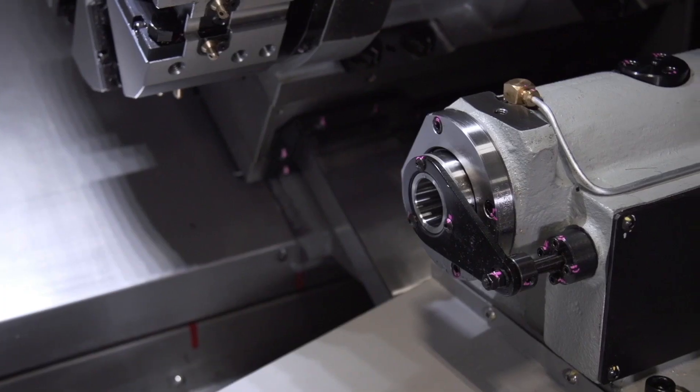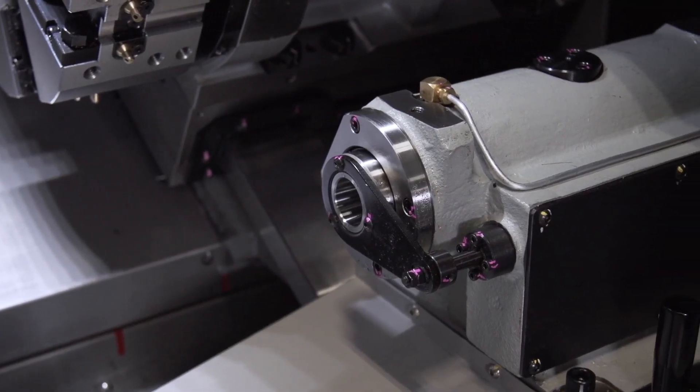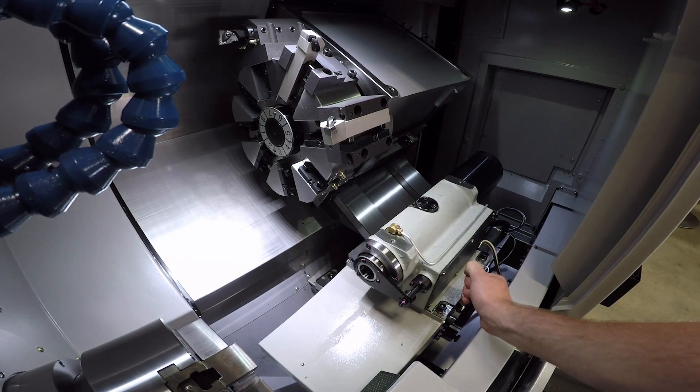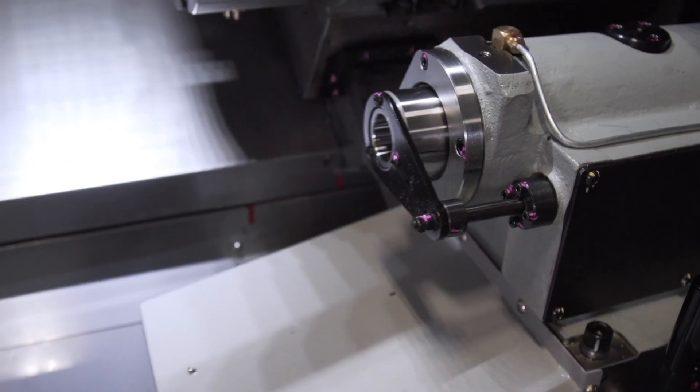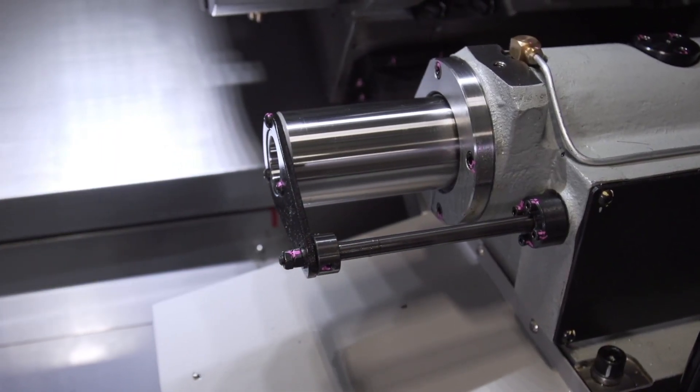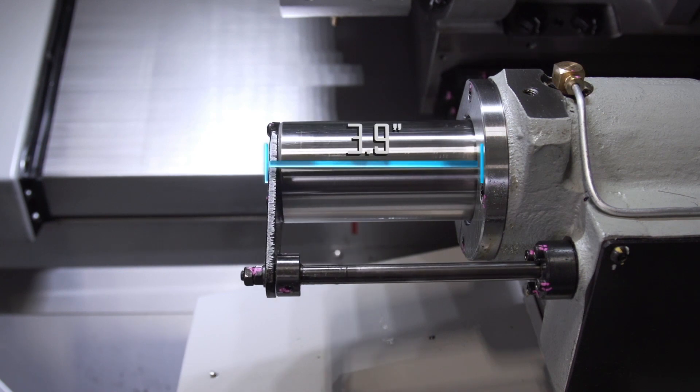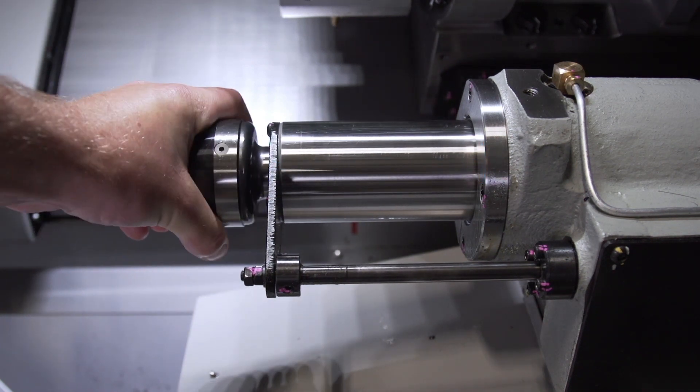The M08J comes standard with a manual adjust tail stock and fully programmable quill. When you require tail stock support, slide the unit into position and lock it into place. Once in position, there's 3.9 inches of programmable quill stroke. And we'll throw in a Morse Taper 4 live center, too, standard.